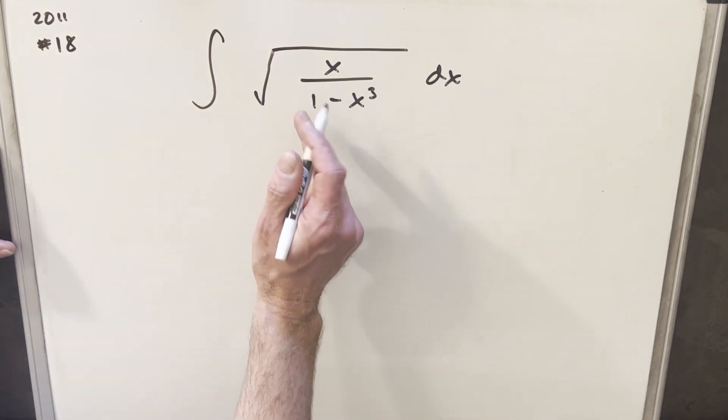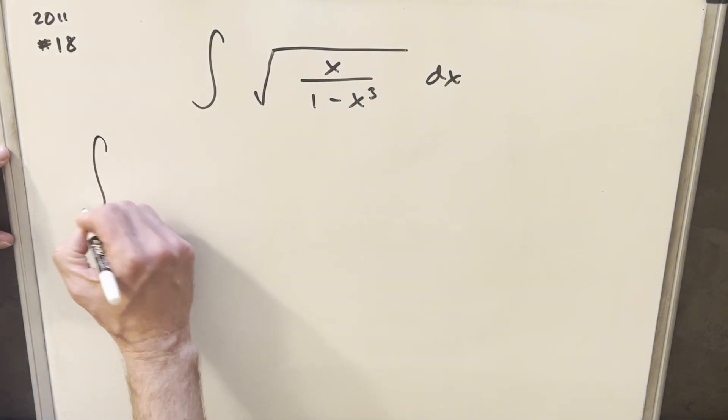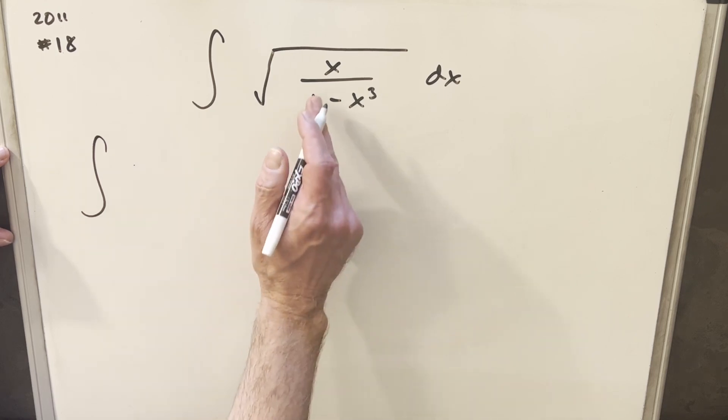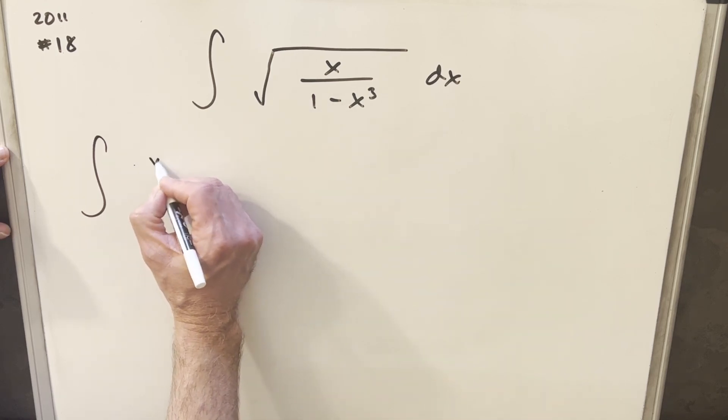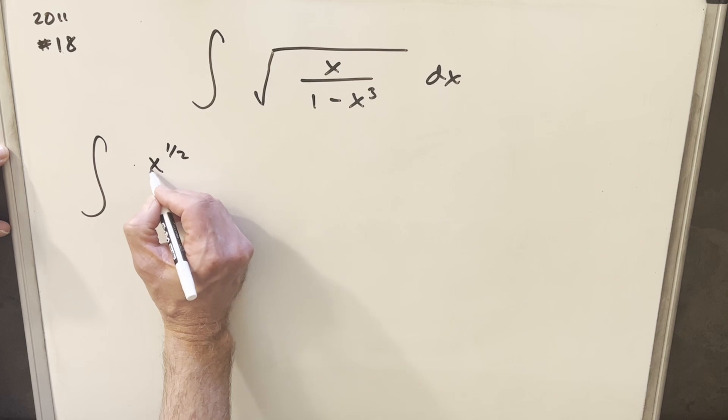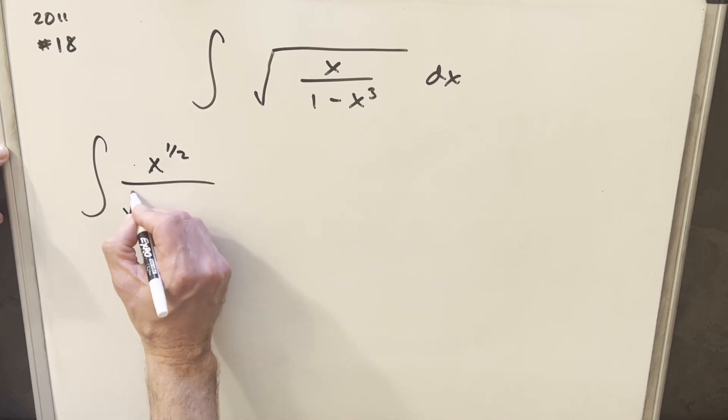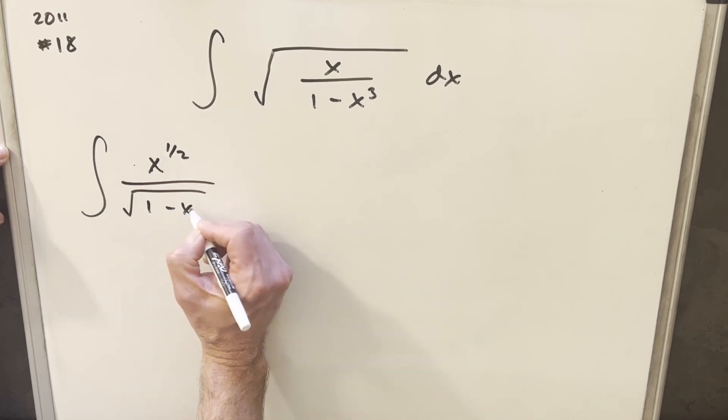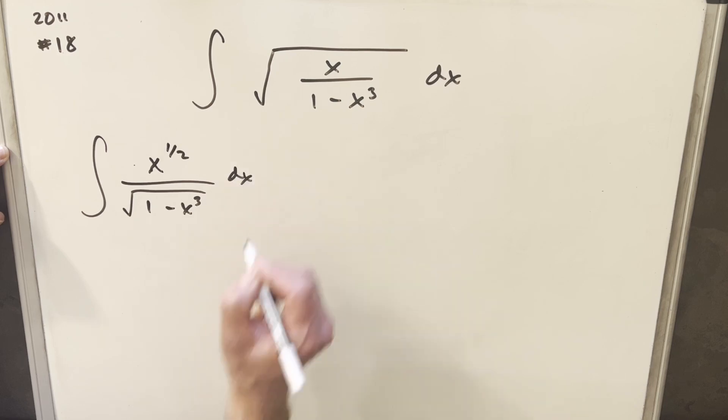So what I'm going to do for that is I'm going to split the numerator and the denominator, and we'll write this with the square root of x in the numerator. But instead of writing a square root, I'm going to write this as x to the one-half in the numerator, and then we'll just have square root of 1 minus x cubed in the denominator.